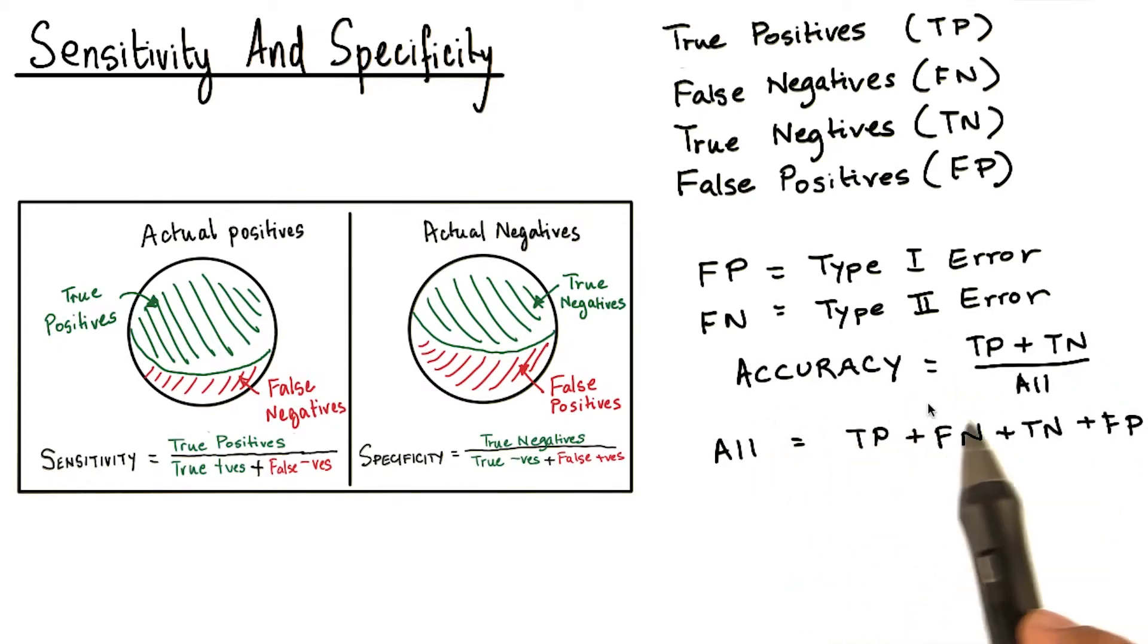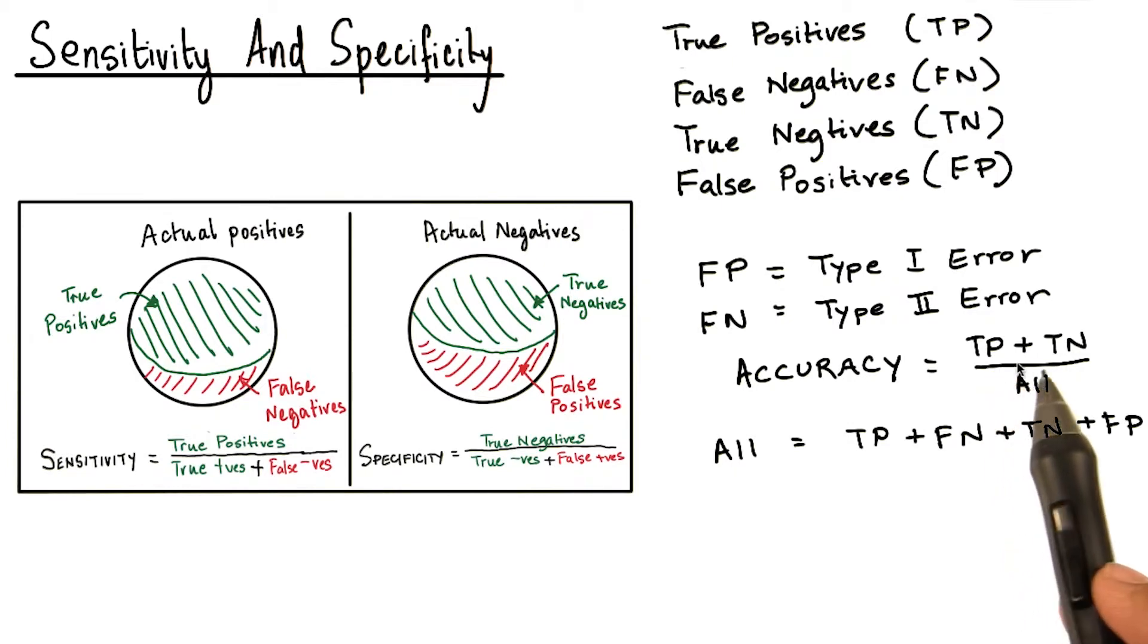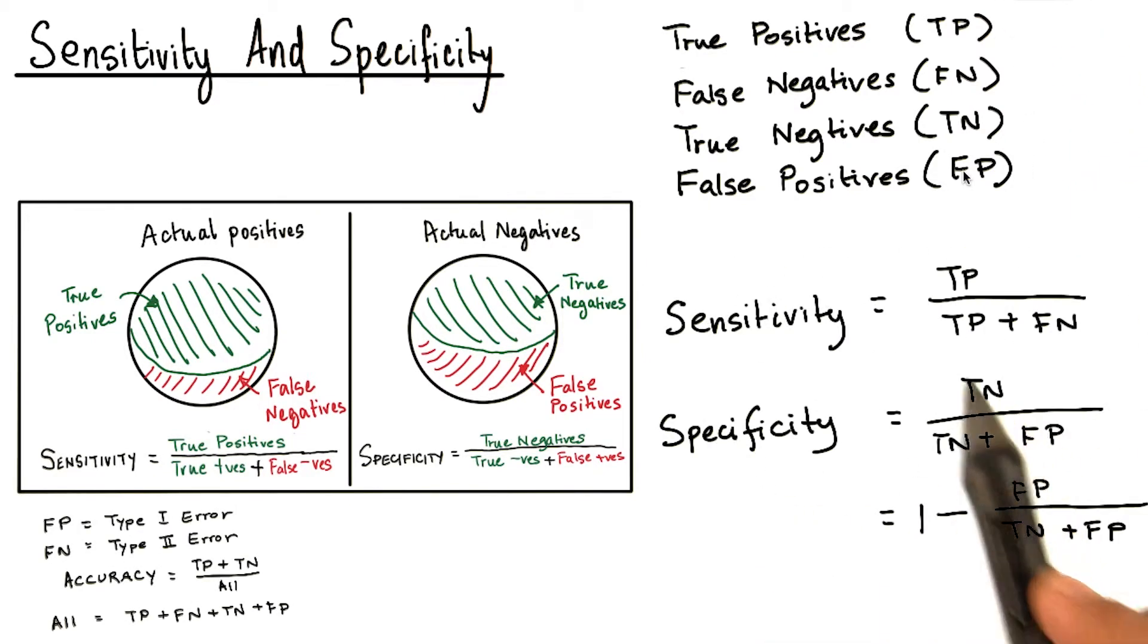The accuracy is given as the sum of the true positive and the true negative divided by all the cases. All the cases are the sum of everything listed here.